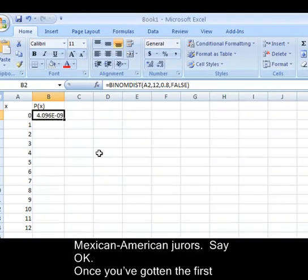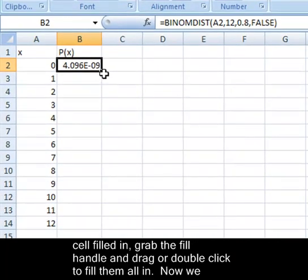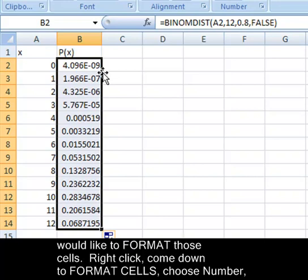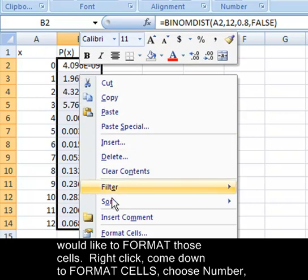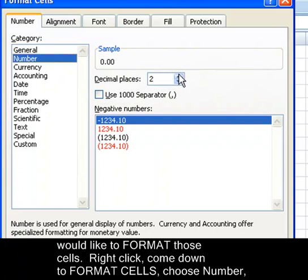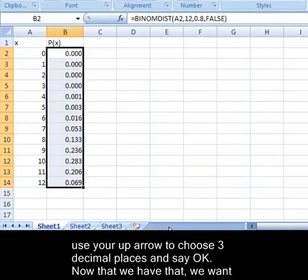Say OK. Once you've gotten the first cell filled in, grab the fill handle and either drag or double click to fill them all in. Now we would like to format those cells—right-click, come down to format cells, choose number, use your up arrow to choose three decimal places, and say OK.